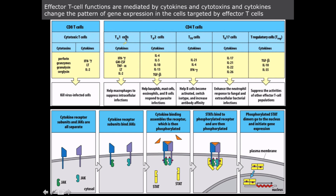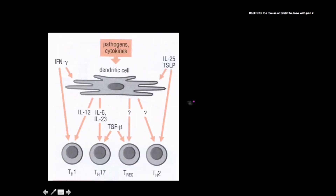As previously mentioned: Th1 is involved with intracellular infections; Th2 with parasites; T follicular cells with isotype switching and increasing antibody affinity, basically helping B cells speed up that process; Th17 deals with extracellular infections; and regulatory T cells suppress all other T cell populations.